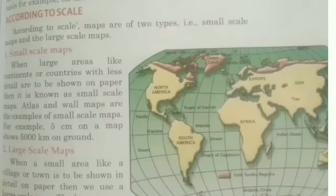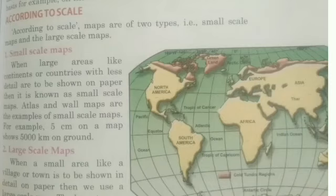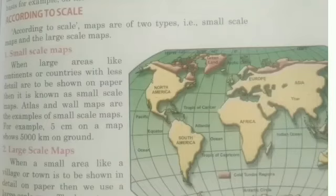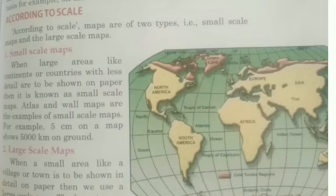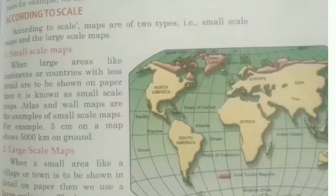Various kinds of maps are useful to us for various purposes. When many maps are put together it is called an atlas. Maps provide more information than a globe and they may be classified on different bases — according to scale or functions. According to scale, maps are of two types: small scale map and large scale map. A small scale map is used when large areas like continents or countries with less detail are to be shown. A large scale map is used when a small area like a village or town is to be shown in detail.